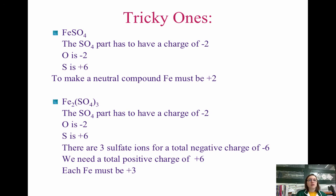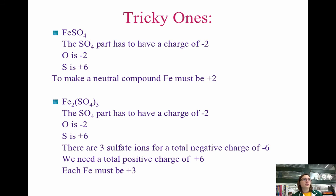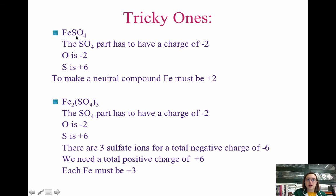For tricky cases like FeSO₄: SO₄²⁻ is the sulfate ion with a charge of −2, so to make a neutral compound, Fe must be +2. You can use your knowledge of naming and writing formulas to determine oxidation states on metals with multiple possible states. Notice Fe₂(SO₄)₃ has two Fe's and three SO₄²⁻ ions; reversing the subscripts tells you SO₄ is 2− and Fe is 3+.